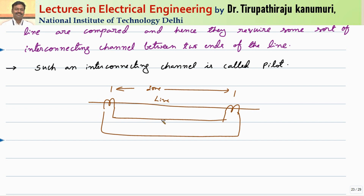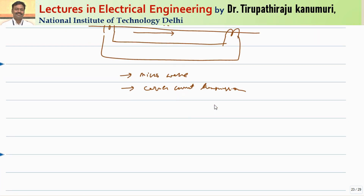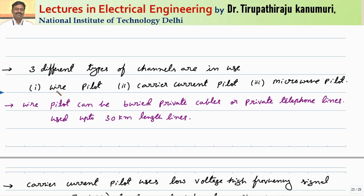Above 30 kilometers, we must go for wireless transmission schemes. One option is to transmit through the same transmission line using a different frequency compared to the supply frequency. Another option is to transmit using microwaves. So either we go for microwave transmission or carrier current transmission. Depending on this, there are three different categories: wire pilot, carrier current pilot, and microwave pilot.